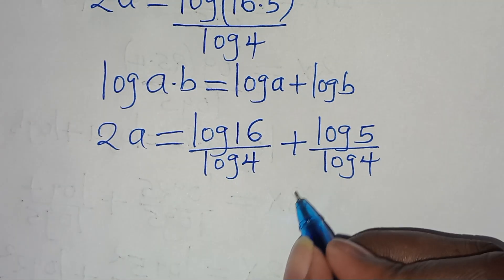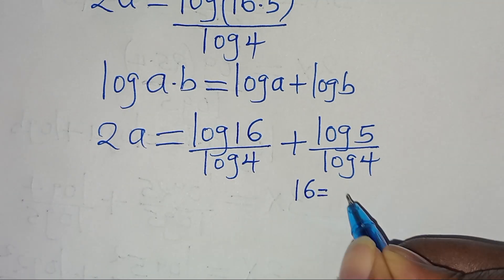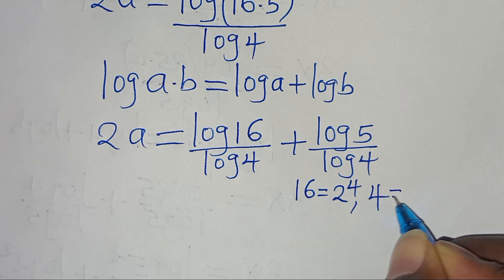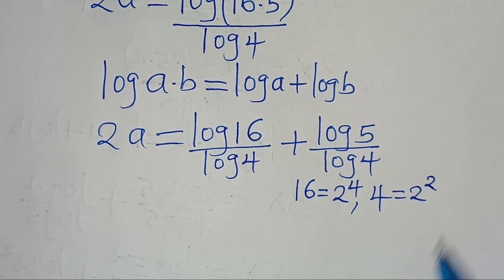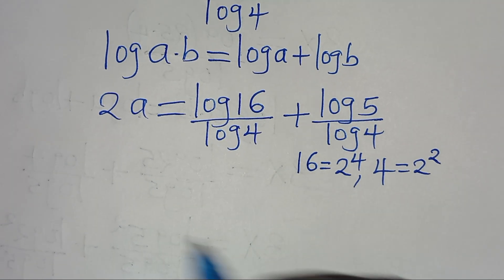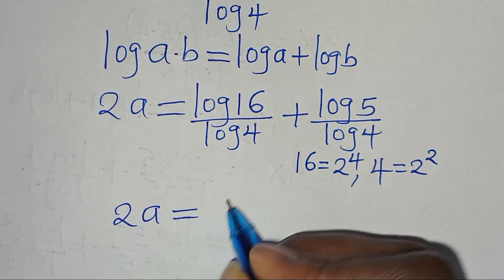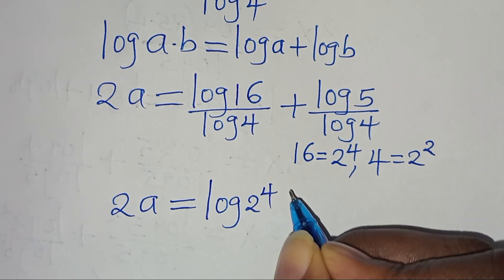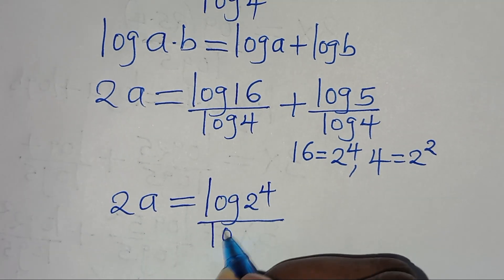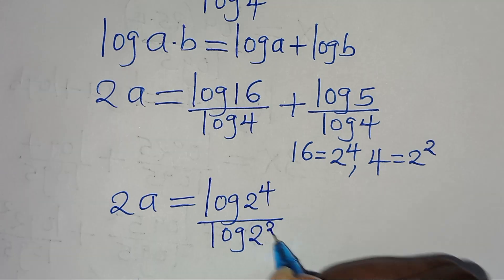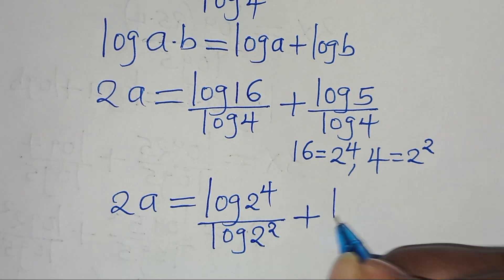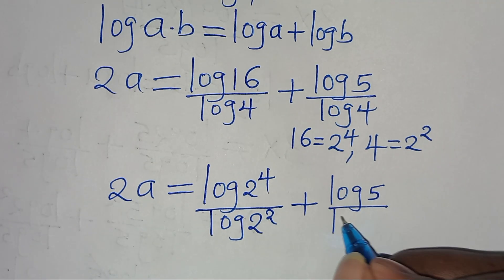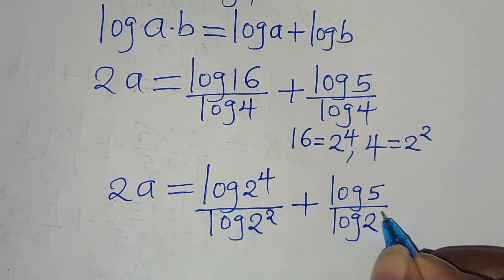Now we can express 16 as 2 to the power of 4, and 4 as 2 to the power of 2. So this implies 2a equals log(2 to the power of 4) divided by log(2 to the power of 2), plus log 5 divided by log(2 to the power of 2).